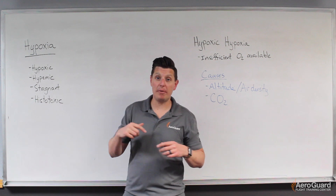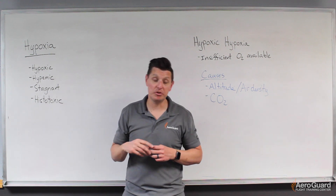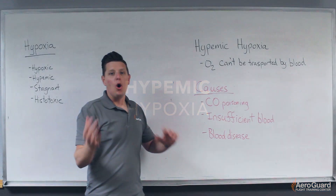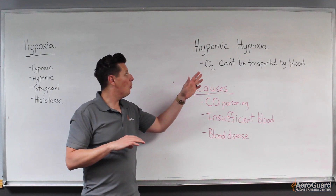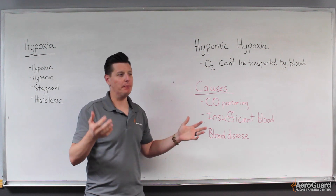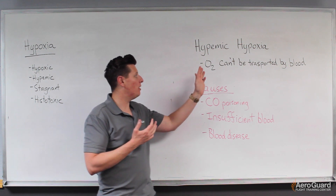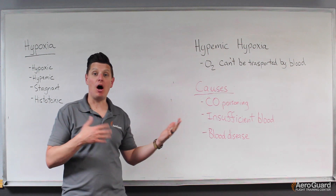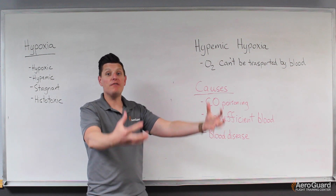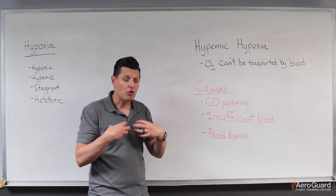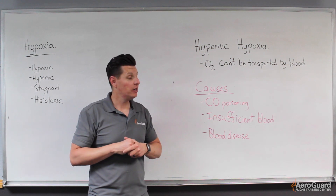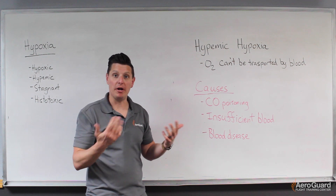Next we'll talk about the second cause: hypemic hypoxia. In this case we're talking about the inability of oxygen to be transported by the blood. With hypemic hypoxia, we have enough oxygen coming into our lungs, but the blood can't carry it to all of our extremities to be used by the rest of our body's cells.